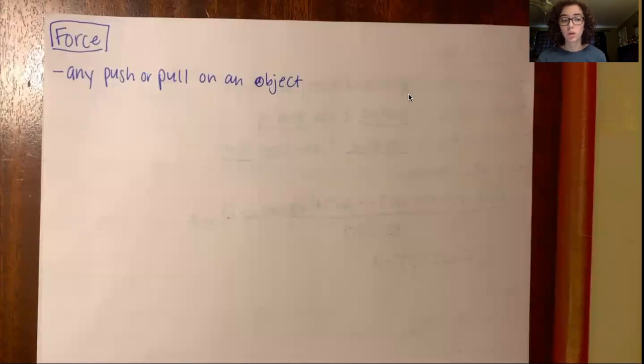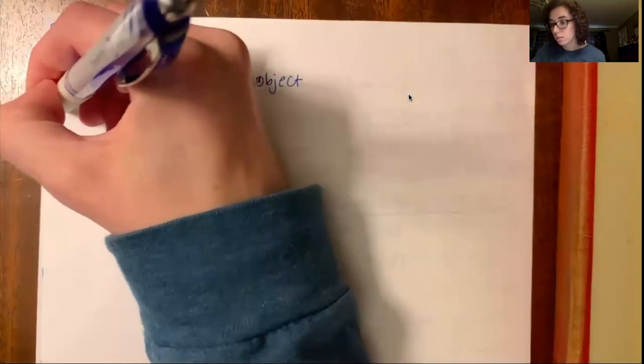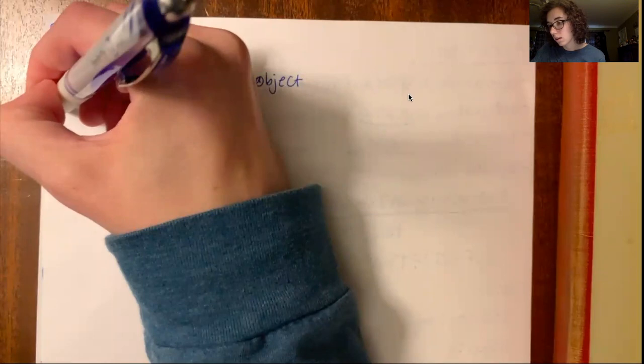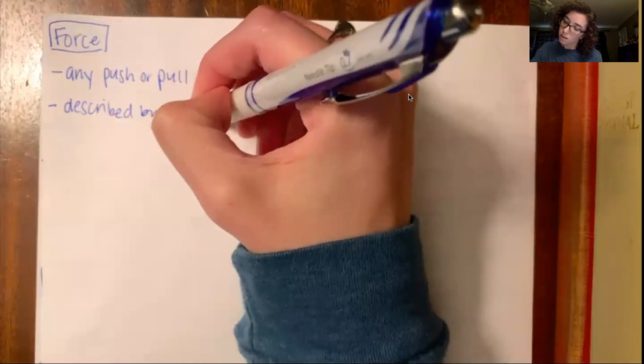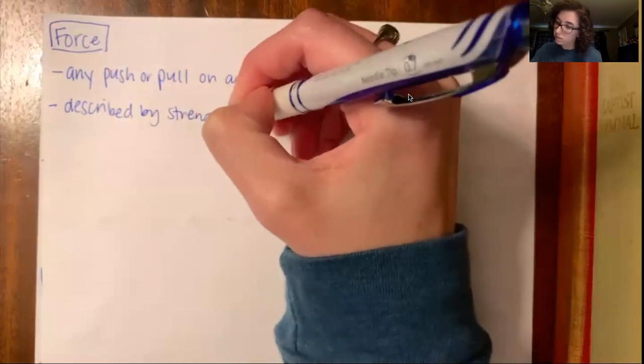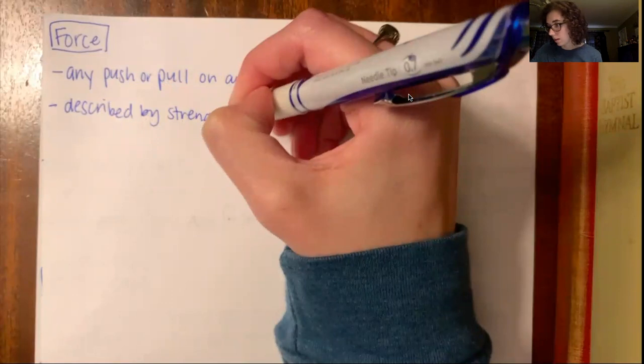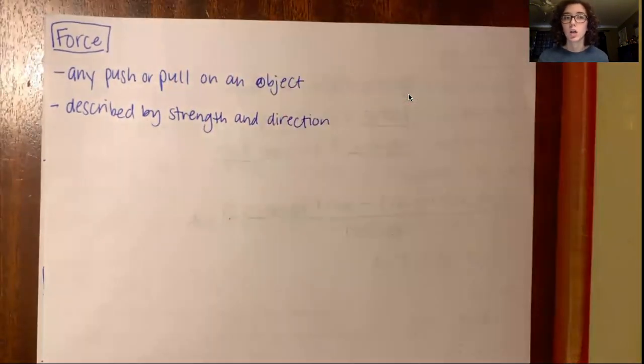Okay, so force is described by strength and direction. Okay, because if you punch something, you're exerting, you're using your strength and you're pushing in a certain direction. Okay, gravity is working in a certain direction and it's pulling you a certain amount. Okay, so it has strength and direction.